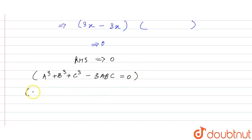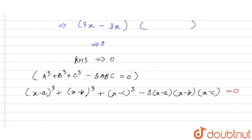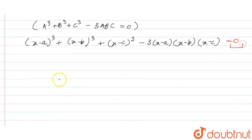Therefore, the expression (x minus a) whole cube plus (x minus c) whole cube minus 3 times (x minus a) into (x minus b) into (x minus c) is equal to 0. So option C is the correct answer: the expression has the value equal to 0.